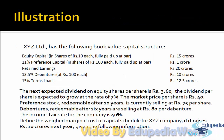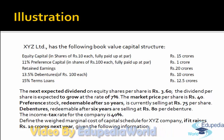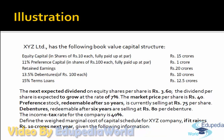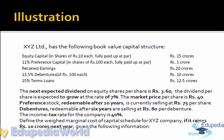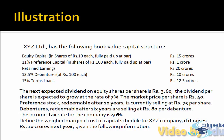So let's do an example, and all these breaking points will be quite clear to you. XYZ Limited has the following book value capital structure: equity share capital 15 CR, 11% preference share capital 1 CR, retained earnings 20 crores, 13.5% debentures 10 crores, 15% term loans 12.5 CR. The next expected dividend on equity share per share is Rs. 3.60. The dividend per share is expected to grow at a rate of 7%. The market price per share is Rs. 40. Preference stock, redeemable after 10 years, is currently selling at Rs. 75 per share. Debentures, redeemable after 6 years, are selling at Rs. 80 per debenture. The income tax rate for the company is 40%.